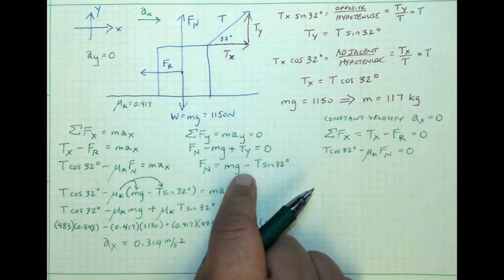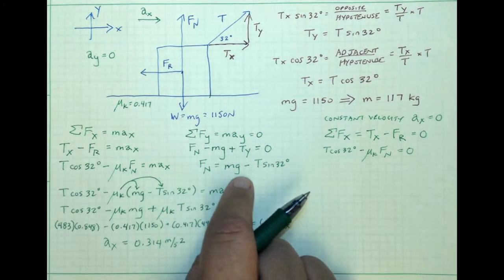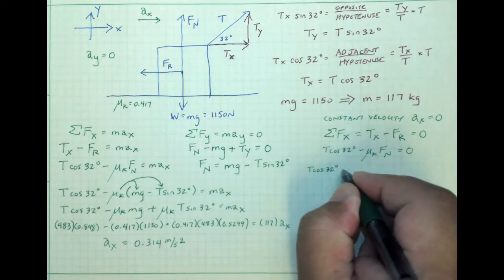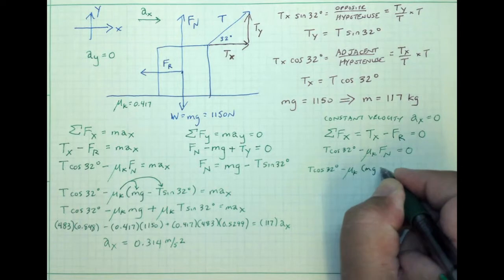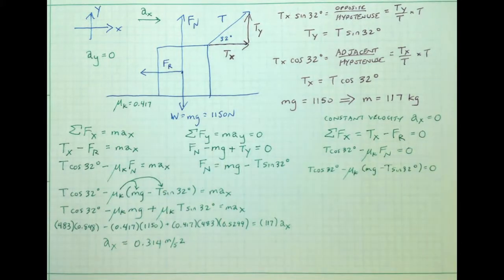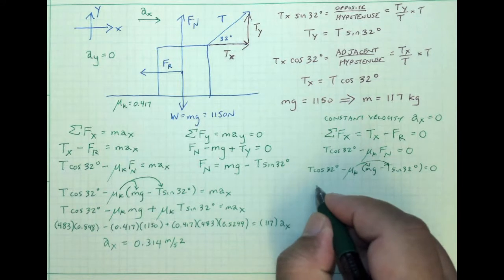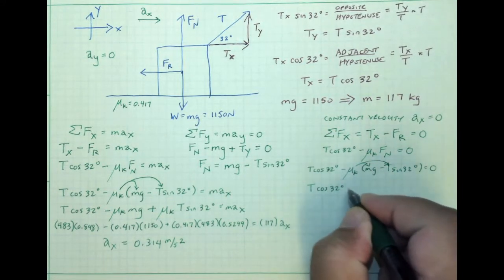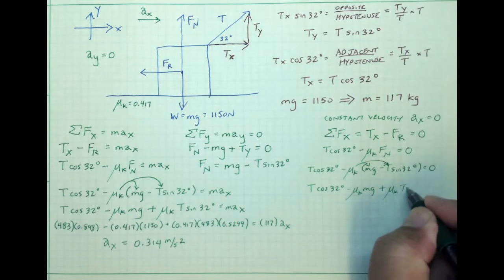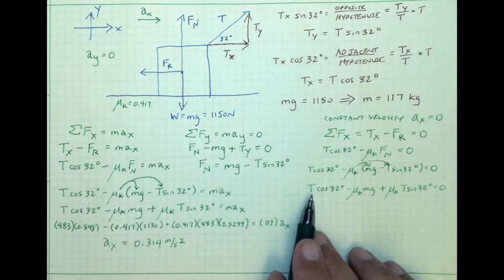So we have T·cos(32°) − μ_k·F_N = 0. Even though the crate moves at constant velocity in x, it's still not moving in y, so the forces remain in balance. We still have the same expression for the normal force, and we still substitute it into the friction force expression, multiplying μ_k by both factors, giving us once again a very long expression. We must be careful to avoid a sign error.